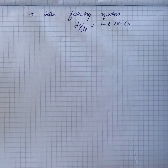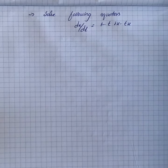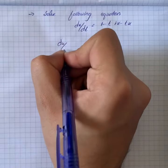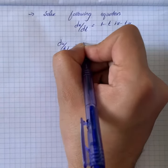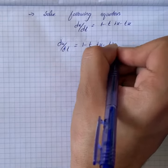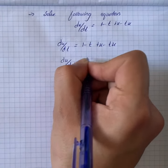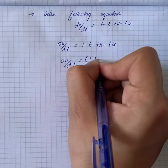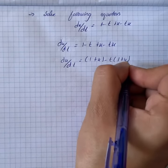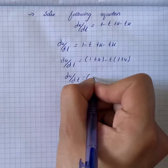We start solving the equation using the gradient equation. We write dx/dt = 1 - t + x - tx, which simplifies to dx/dt = 1 + x - t(1 + x), and further to dx/dt = (1 + x)(1 - t).